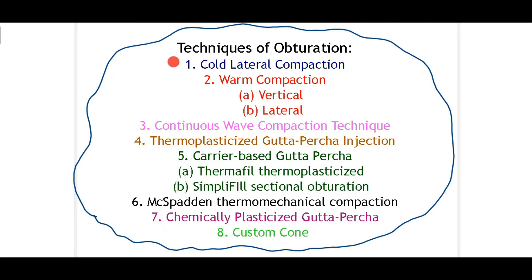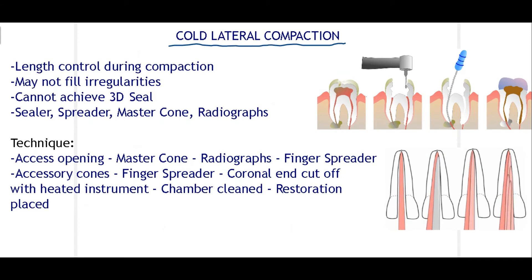Moving to the main objective — techniques of obturation. The first and most commonly used technique is cold lateral compaction. The entire procedure involves access opening, removing pulp, cleaning and shaping, then obturation and coronal restoration. A key limitation is that cold lateral compaction may not fill all irregularities, as the GP does not plasticize like in warm techniques. It also cannot achieve a 3D seal in the entire canal.